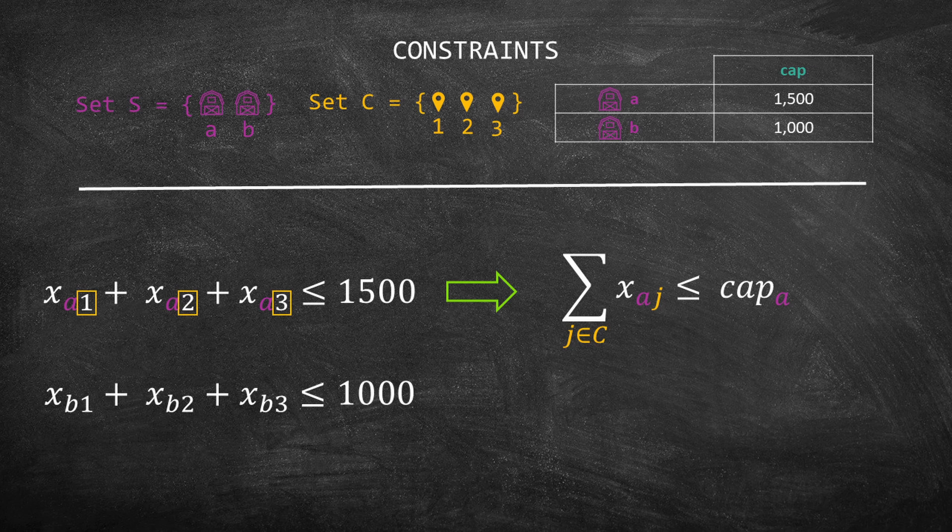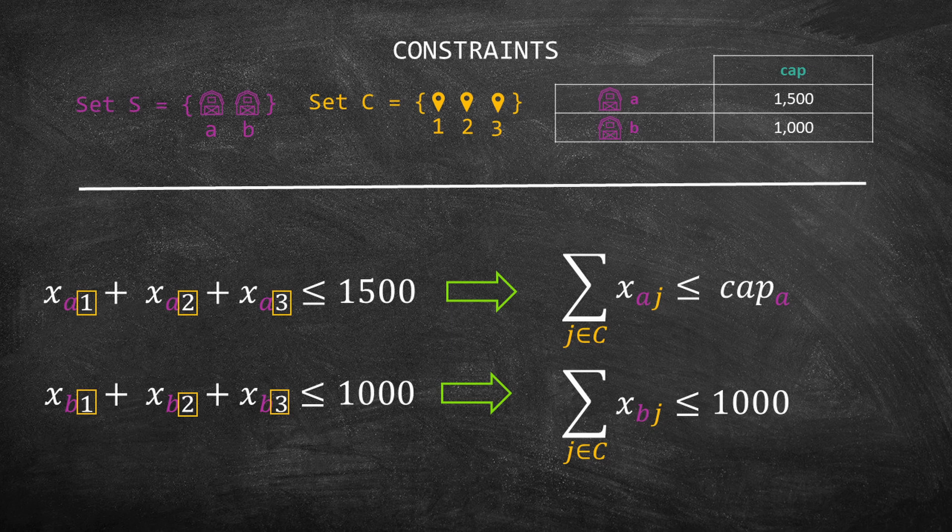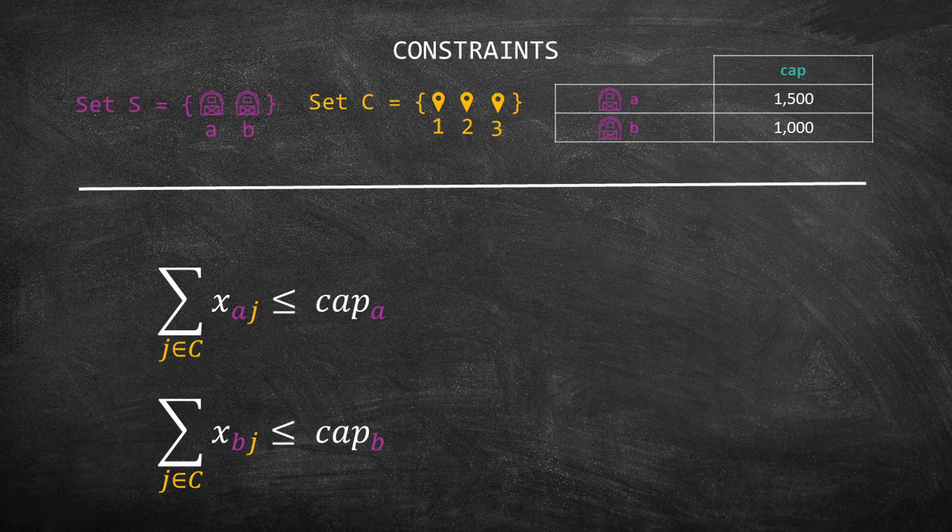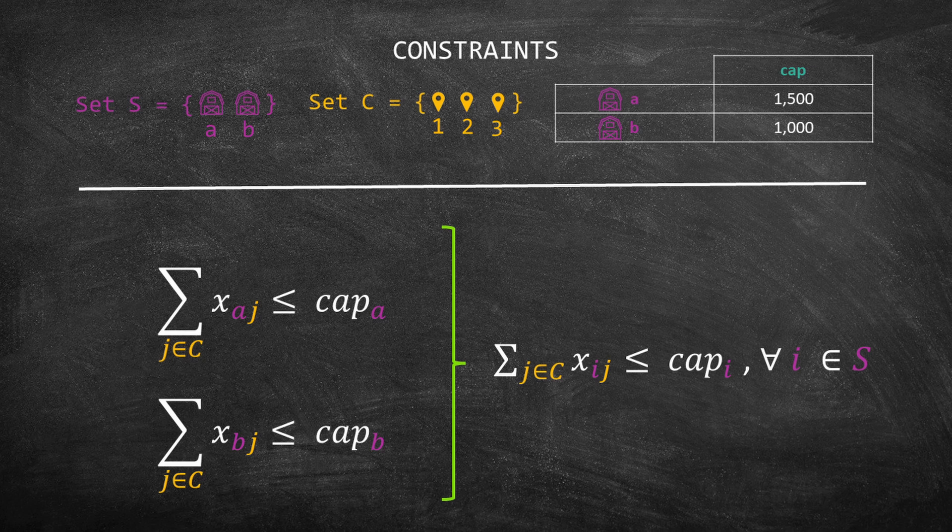Let's do the same with the other constraint. The first index is supplier B, and the second index considers each customer. Thus, we can rewrite this equation as the sum of J in the set of customers C of XBJ, which is less than or equal 1,000. Note that we can also replace 1,000 by CAP index B. Do you see that these equations are similar except for their supplier? Let's combine these two constraints into one.